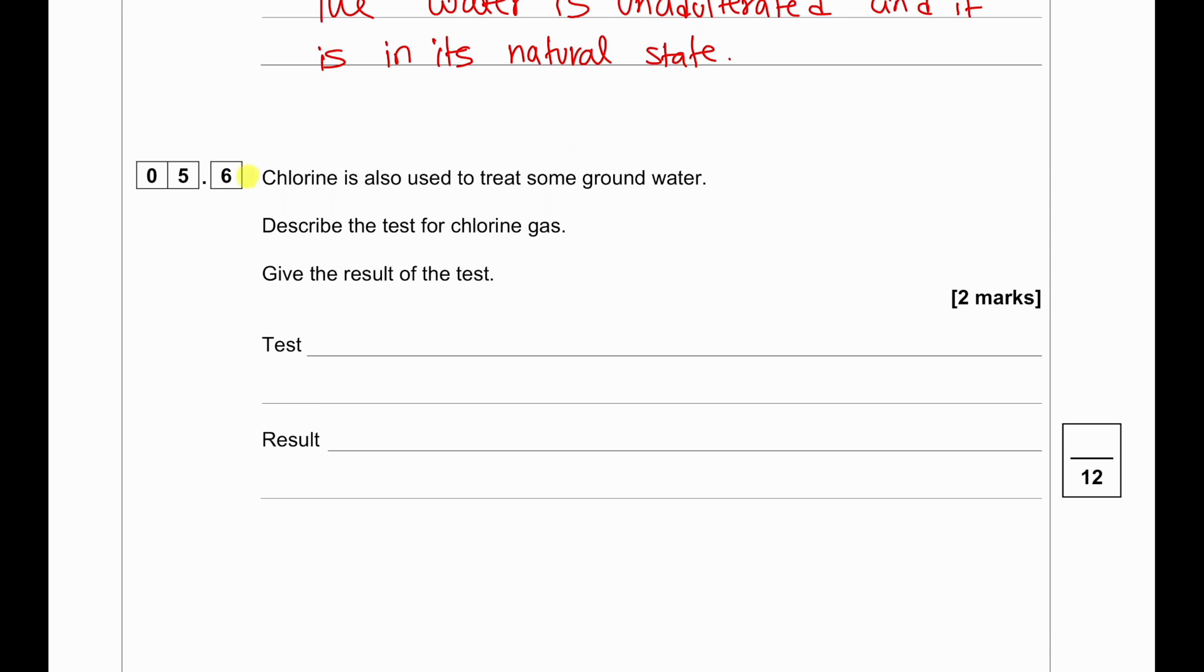Chlorine is used to treat some groundwater. Describe the test for chlorine gas. To test for chlorine gas, we can use a damp litmus paper and the result will be the chlorine gas will bleach the damp litmus paper and turn it white.